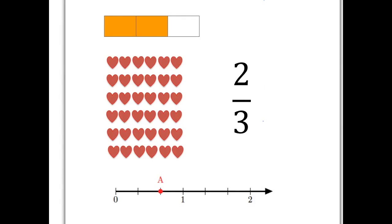So let's start with the number two-thirds. That's a fraction. Let's remember terminology. Two at the top of the fraction is called the numerator. Three at the bottom of the fraction is called the denominator.